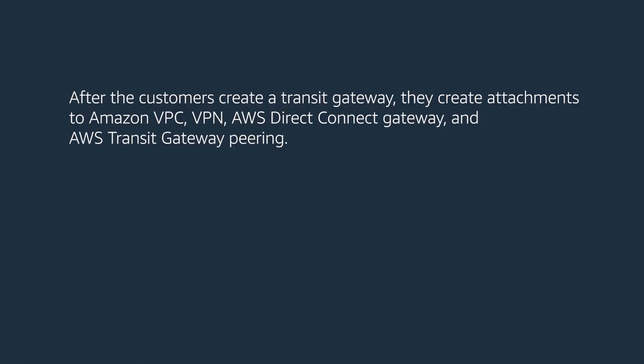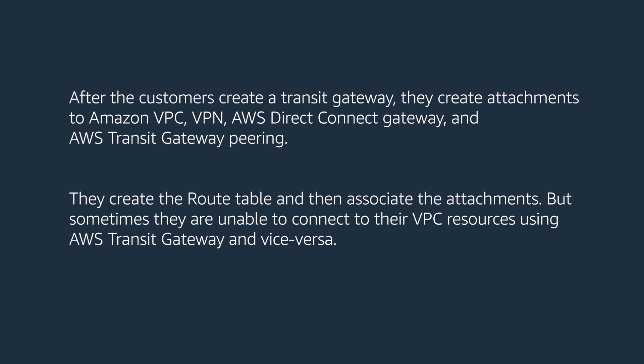After customers create a Transit Gateway, they create attachments to Amazon VPC, VPN, AWS Direct Connect Gateway, and AWS Transit Gateway peering. They create the route table and then associate the attachments, but sometimes they are unable to connect to their VPC resources using AWS Transit Gateway and vice versa.